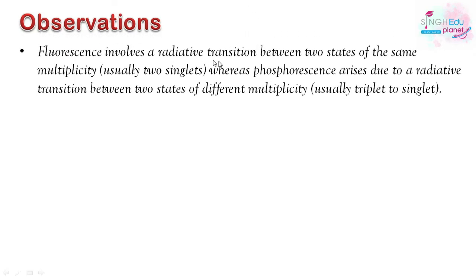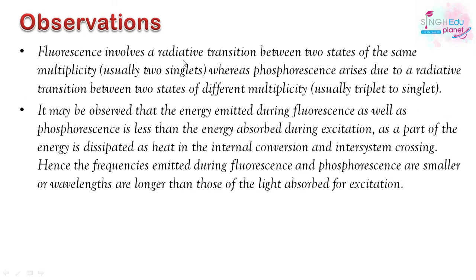To summarize the Jablonski diagram observations: fluorescence is a radiative transition between two states of the same spin multiplicity (singlet to singlet). Phosphorescence is a radiative transition between two states of different spin multiplicity (triplet excited to singlet ground). The energy emitted during fluorescence is less than the energy absorbed, because part of the energy is dissipated via internal conversion (higher singlet to lower singlet) and inter-system crossing (singlet to triplet).